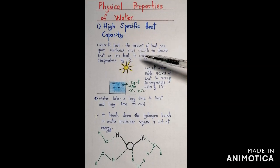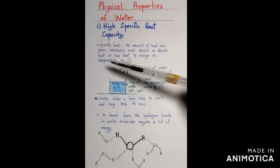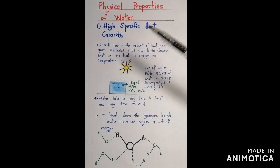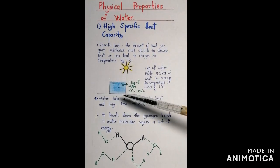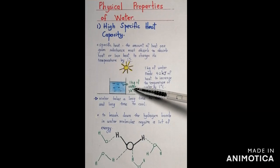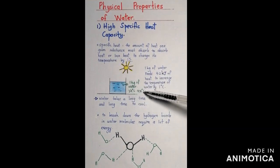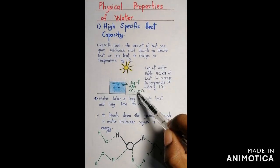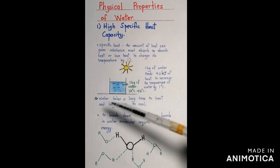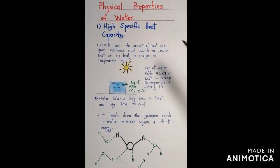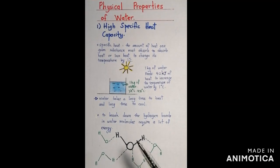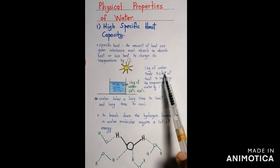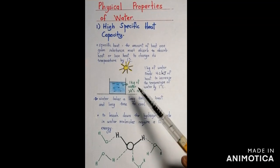Specific heat means the amount of heat one gram of a substance must absorb or lose to change its temperature by one degree Celsius. For example, if you have one kg of water at 24°C, to increase the temperature to 25°C you need 4.2 kilojoules of heat. This is because breaking the hydrogen bonds in water molecules requires a lot of energy — 4.2 kilojoules.